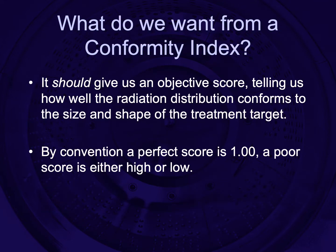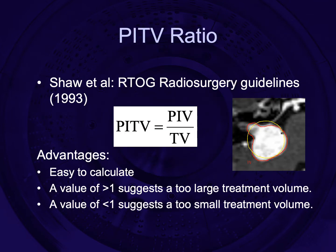So what we want is an index that gives us an objective score telling us how well the radiation distribution conforms to the size and shape of the treatment target. By convention, a perfect score is one and a poor score is either high or low. Probably the first index to be introduced was called the PITV ratio, published by Shaw et al. in the RTOG radiosurgery guidelines, also known as the RTOG conformity index.